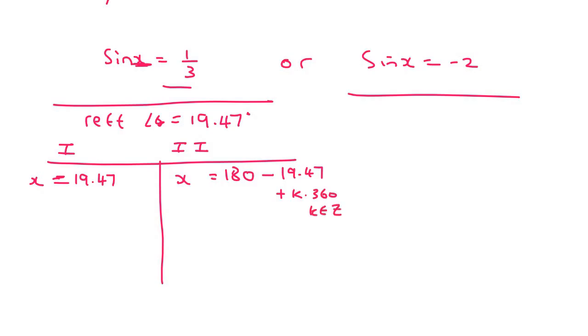And then we always have to do that whole plus k times 360. K is an element of z. You might use a different letter. It doesn't matter. Here we've got to say it as well. And so this one's already solved. This one over here gives us 160.53.